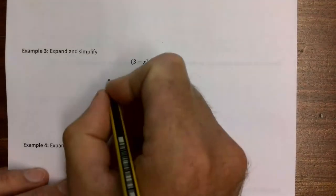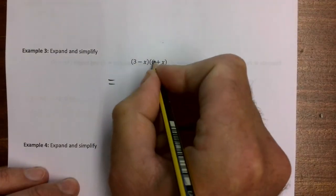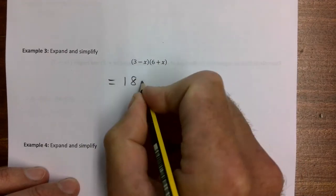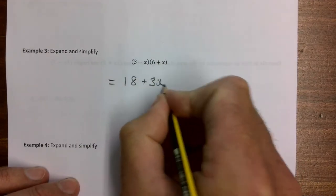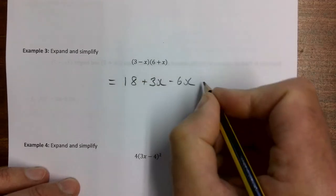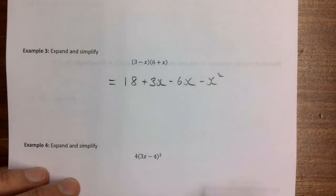Example 3: 3 times 6, that's our first, is 18. Outer plus 3x, inner minus 6x, and last minus x squared.